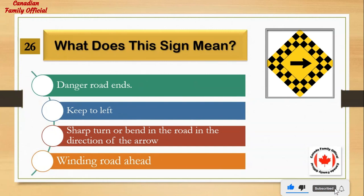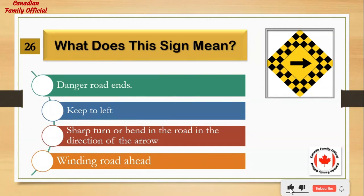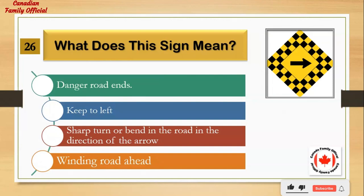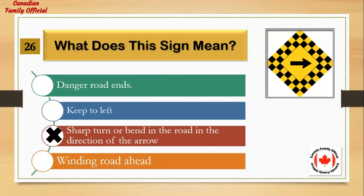Number 1: danger road ends. Number 2: keep to the left. Number 3: sharp turn or bend in the road in the direction of the arrow. Number 4: winding road ahead. And the answer is: sharp turn or bend in the road in the direction of the arrow.